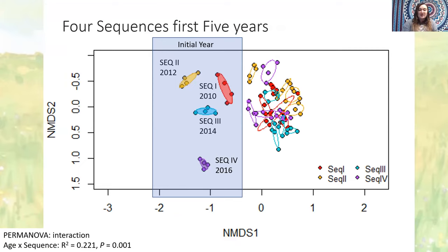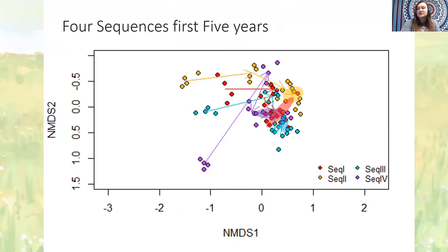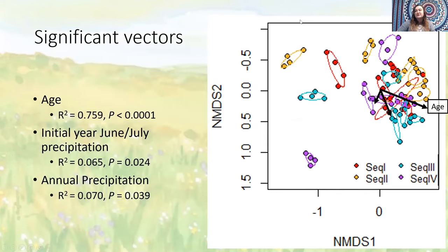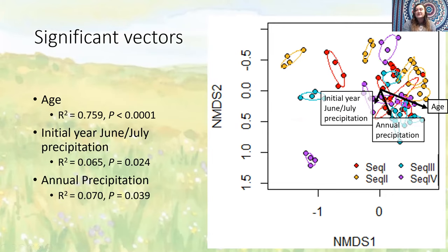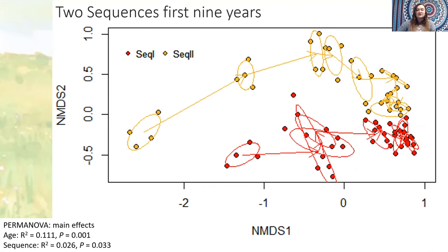This is an ordination of the first four sequences for their first five years, with each sequence coded by color. There was a significant sequence-by-age interaction in the PERMANOVA, and you can see how communities change through time. Communities started with a large variety between them but appear to be converging, moving in a similar trajectory with age. However, each of the final communities remains distinct from each other. Age primarily separates these communities moving from left to right as restorations develop, and sequences are separated from each other by both precipitation in June and July of the establishment year as well as annual precipitation. If you look at the first two sequences over nine years, they don't converge.